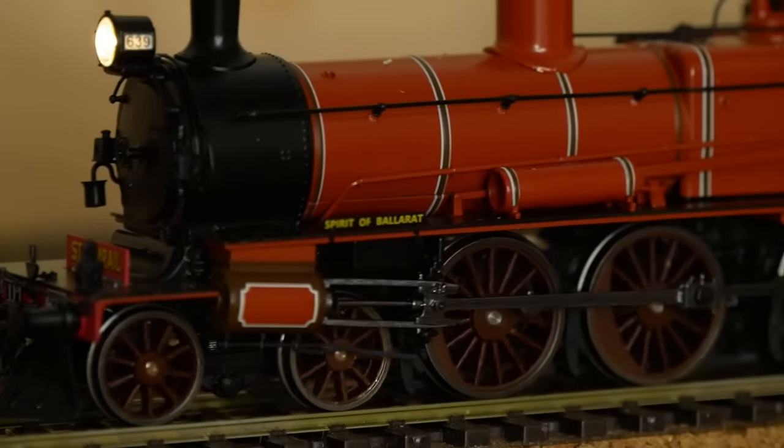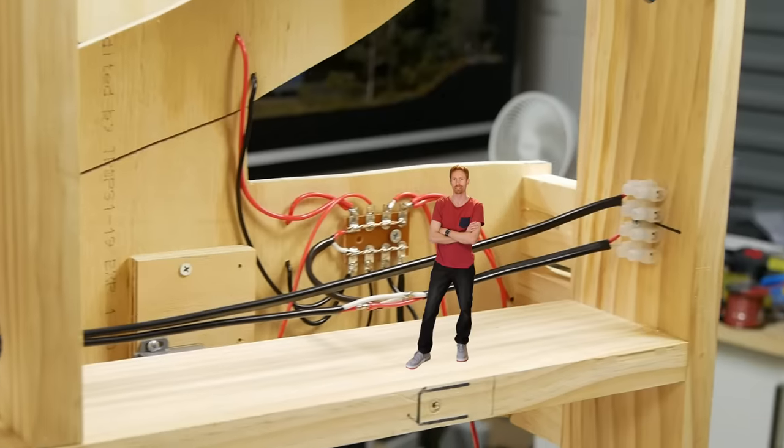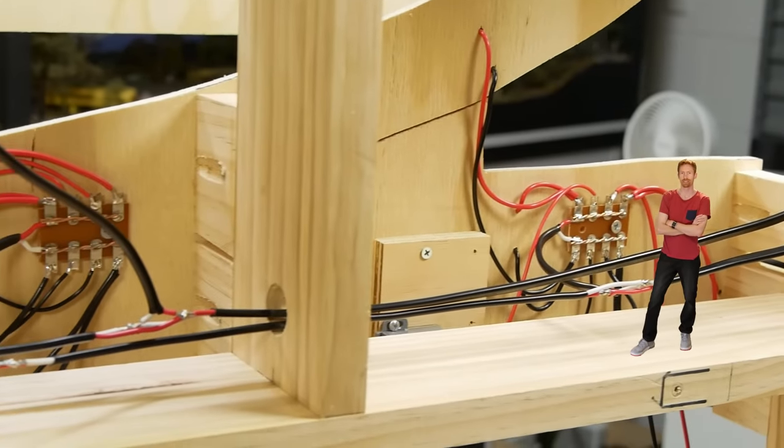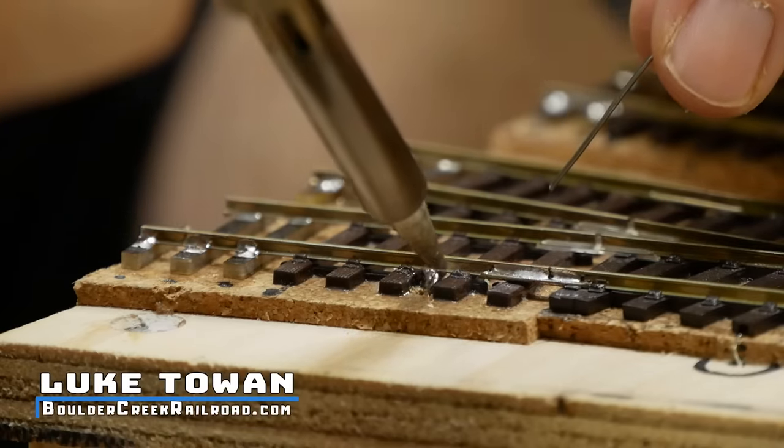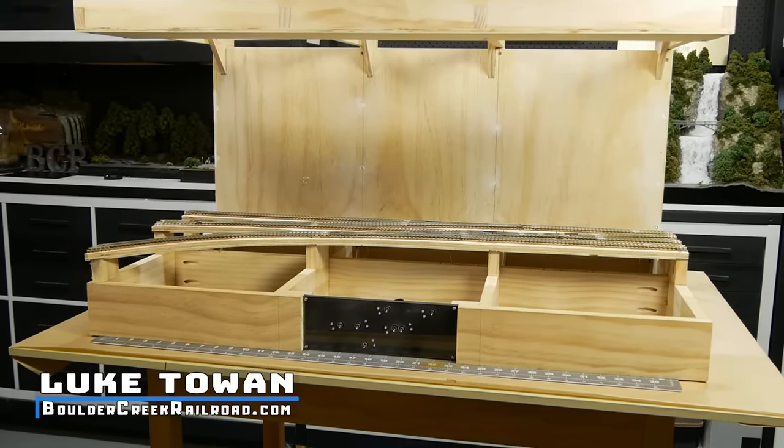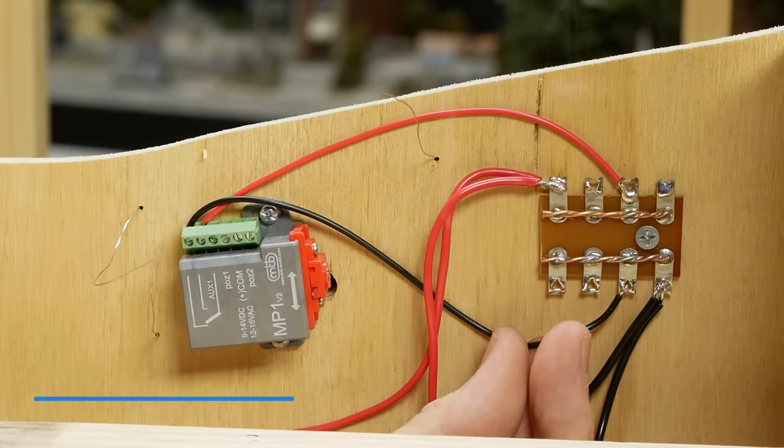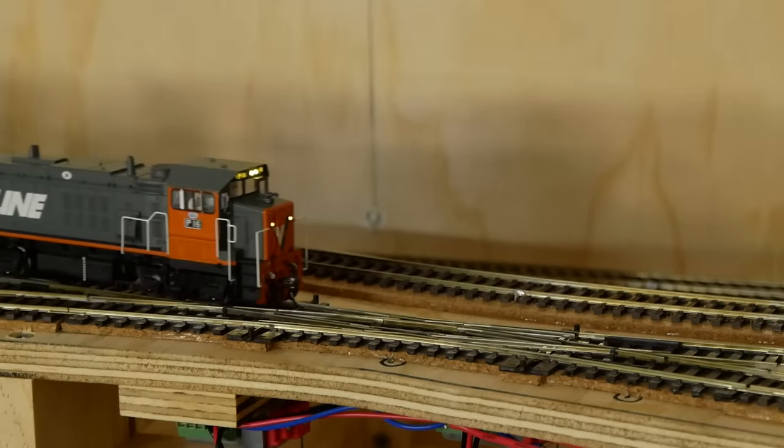One of the most important steps in making a smooth running railroad is having reliable wiring. So in this video I'll step you through how I not only wire the track but also install the control panel and connect the switch machines to make a fully functional layout ready to test some trains.